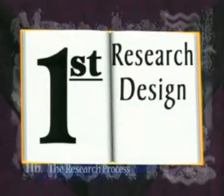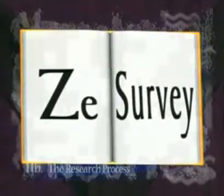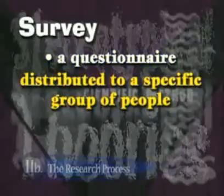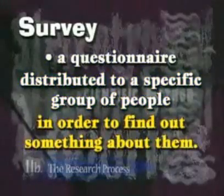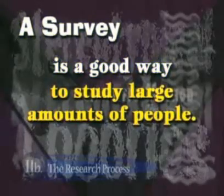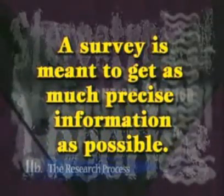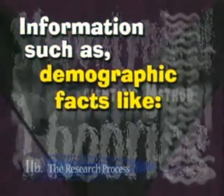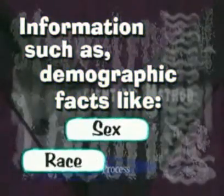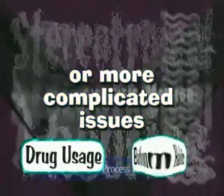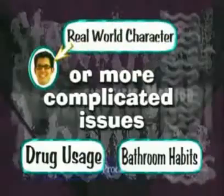The first research method to consider is the survey. A survey is a questionnaire distributed to a specific group of people in order to find out something about them. It's a good way to study a large sample of people. The questions tend to be specific to get as much precise information as possible, covering demographic facts like sex, race, and income, or more complicated issues like drug use, bathroom habits, or your favorite real-world character.